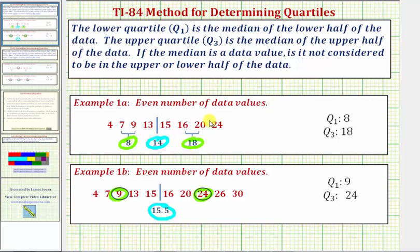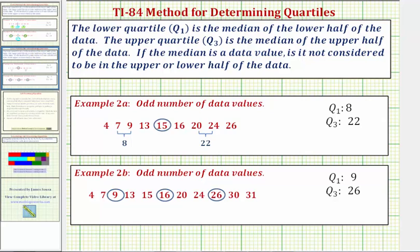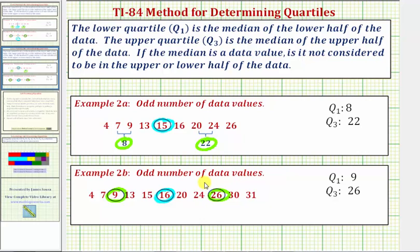Now let's look at two examples where we have an odd number of data values. Because we have an odd number of data values, notice how the median is a data value in both cases, so the TI does not consider it in the upper or lower half. Therefore Q1 is going to be the mean of 7 and 9, which is 8, and Q3 is going to be the average of 20 and 24, which is 22. In the other example, because the TI does not consider the median in the upper or lower half, Q1 is 9 and Q3 is 26.